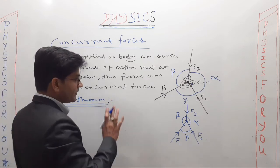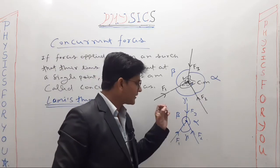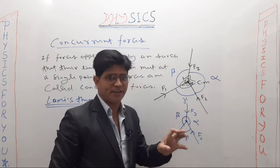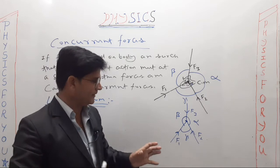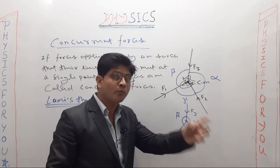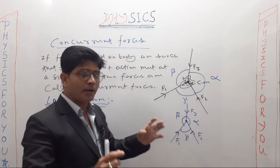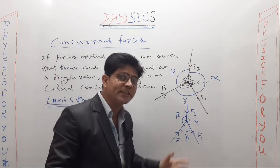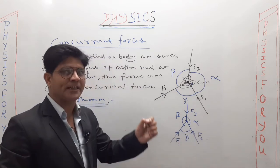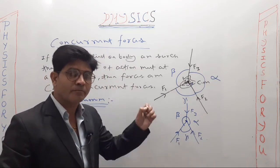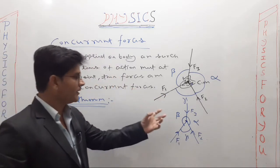Now let's write the statement of the theorem. If these three concurrent forces are applied on the body and the body is in equilibrium — meaning the net force on the body is zero — then this theorem applies. The statement is: if a body is in equilibrium under the action of three concurrent forces, then each force is directly proportional to the sine of the angle between the other two forces. This is the statement of Lamy's theorem.